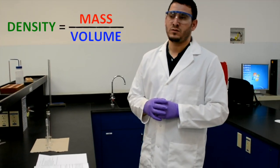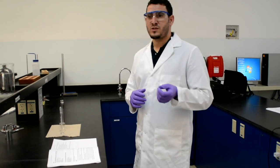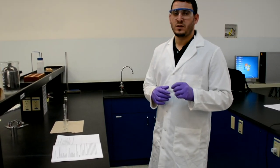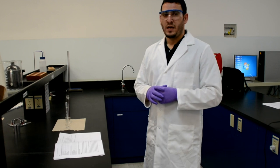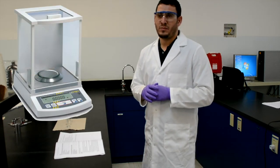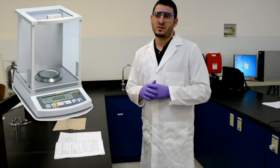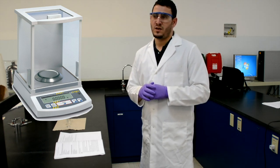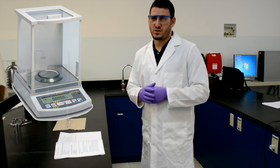To measure density we need to measure the mass and the volume, because density is equal to mass over volume. How precise our measurements will be is related to the precision of the equipment or glassware we are using. In terms of mass, we will be using an analytical balance, which gives us four decimal places — very good precision.